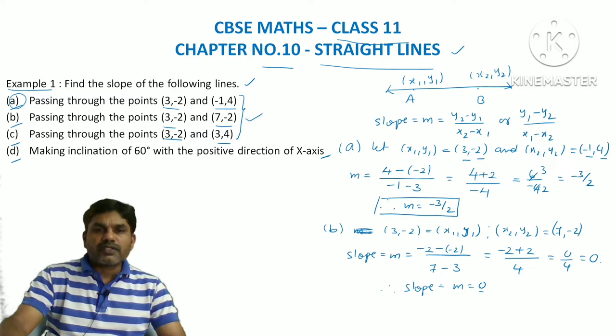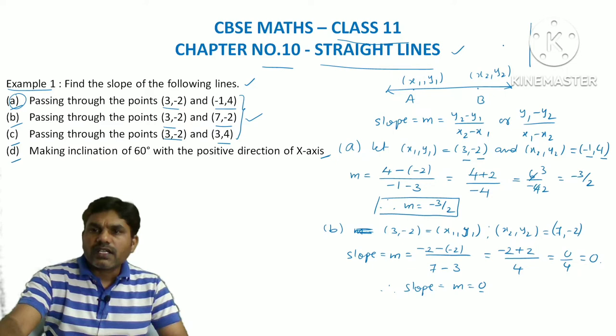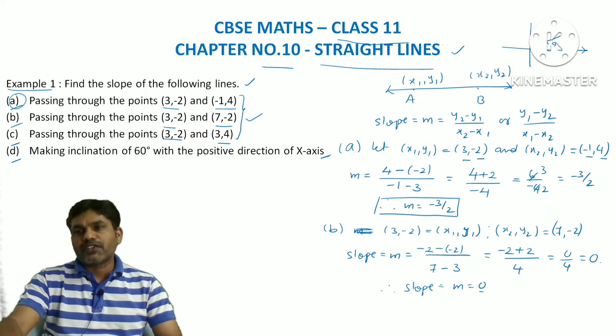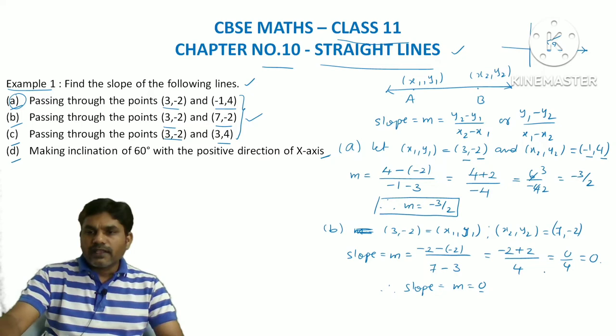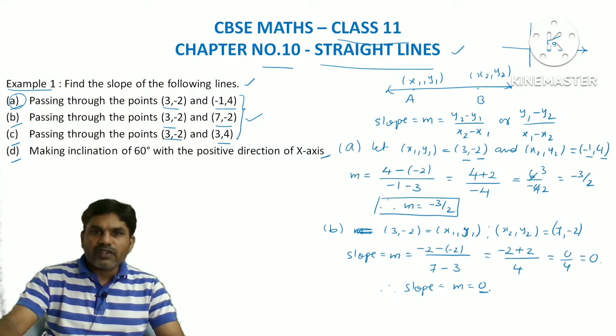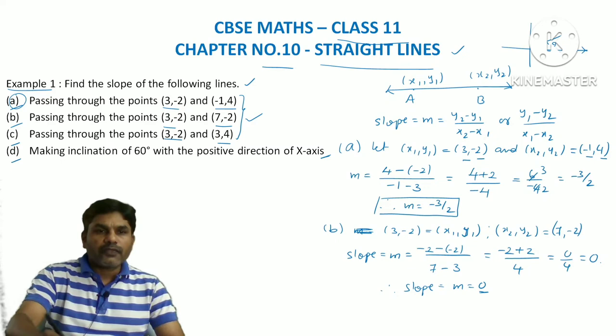When the slope of any line is 0, it means the line is not rotating — it is coinciding with the positive x-axis. Inclination is the angle made by the line with the positive x-axis in the anti-clockwise direction. This line is not making any inclination with the positive x-axis, that is why its slope is 0.